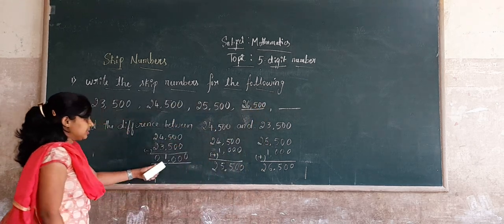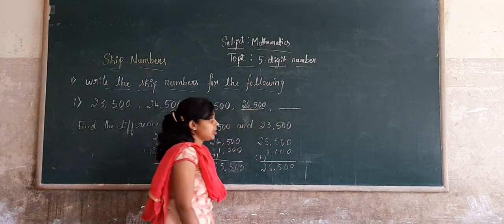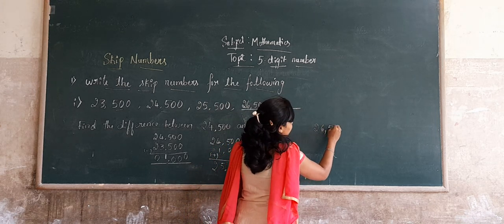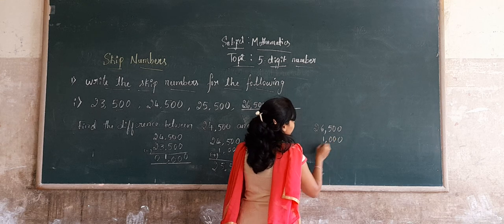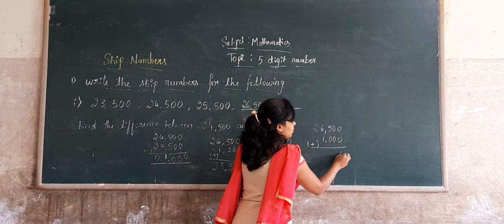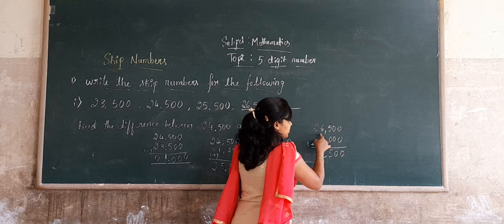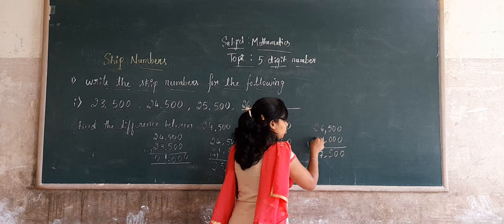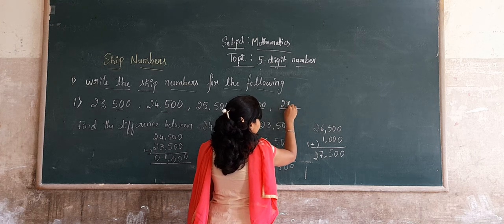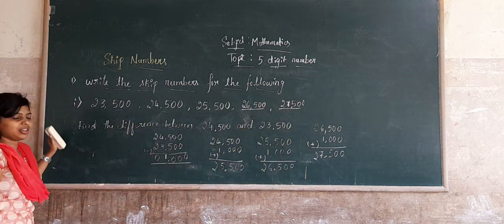Now, add the difference of 1,000 to 26,500 to get the next skip number. Working through: 0 plus 0 is 0, 0 plus 0 is 0, 5 plus 0 is 5, 6 plus 1 is 7, 2 plus 0 is 2. The next skip number is 27,500. This is the way to find skip numbers for 5-digit numbers.